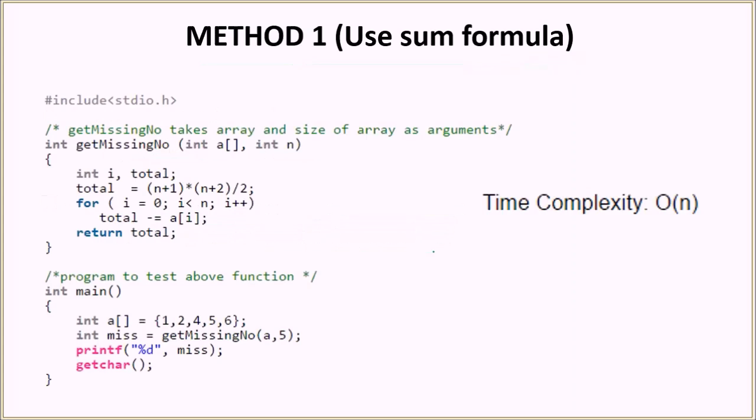Let's see how it works in the code. We have a driver function here. We declare the input array here. Then we are calling the getMissingNumber function, which is the whole crux of the algorithm. It returns the variable miss and then we basically print the miss variable. Let's see how getMissingNumber is working.